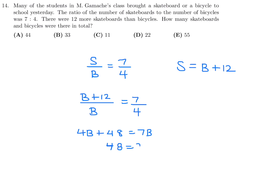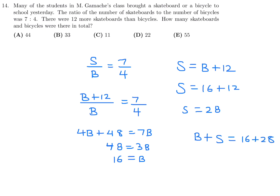So 48 equals 3B, meaning B equals 16, and therefore S equals 16 plus 12, so S equals 28. They want the total of bicycles and skateboards: 16 plus 28 equals 44. Number 14, the answer is A.